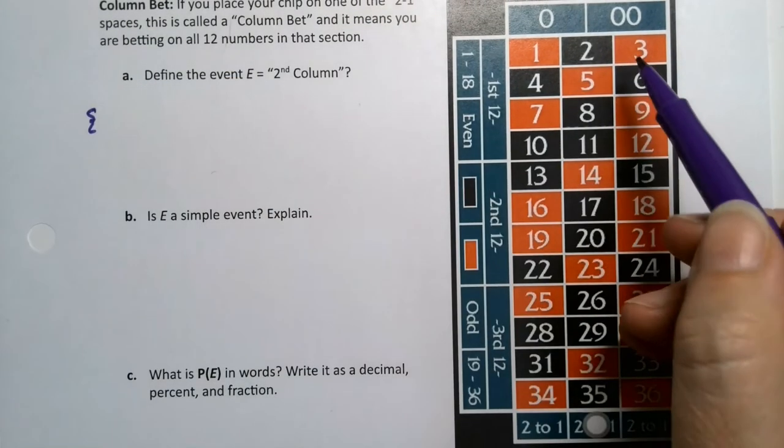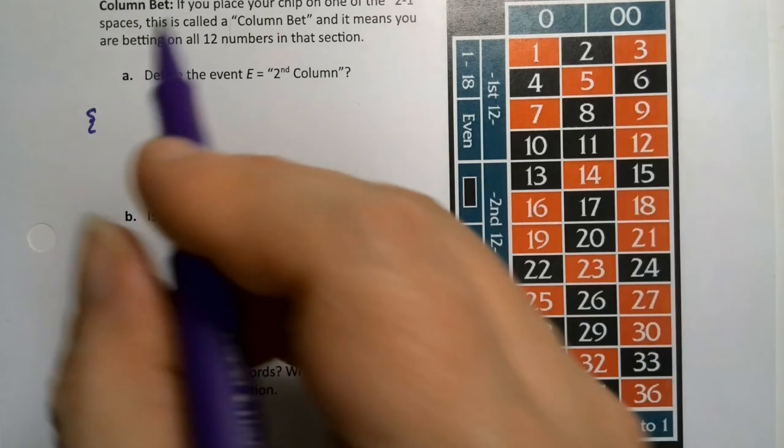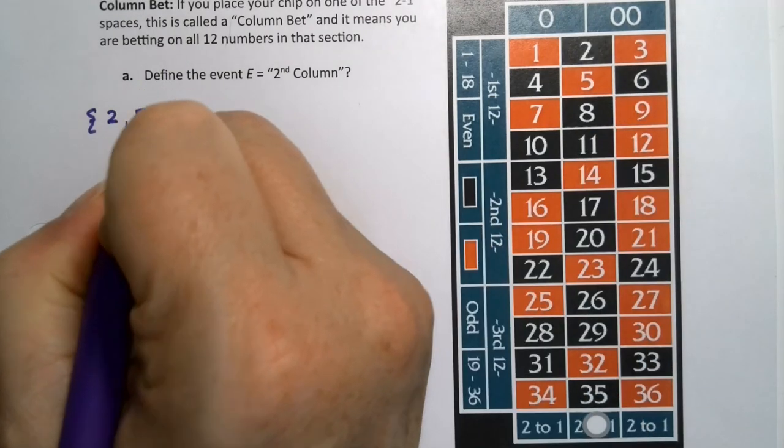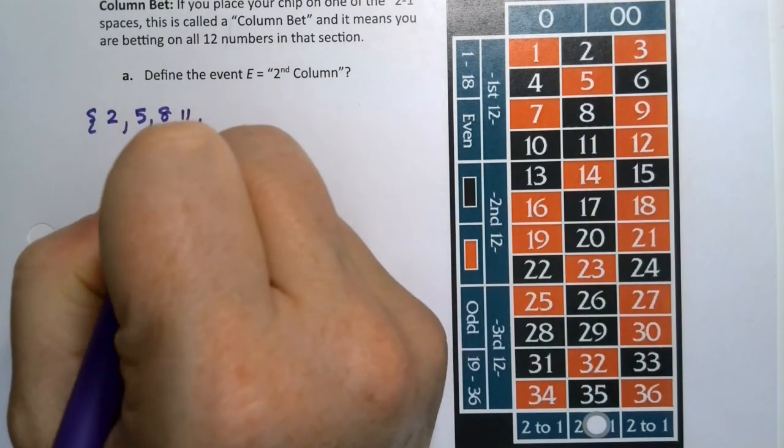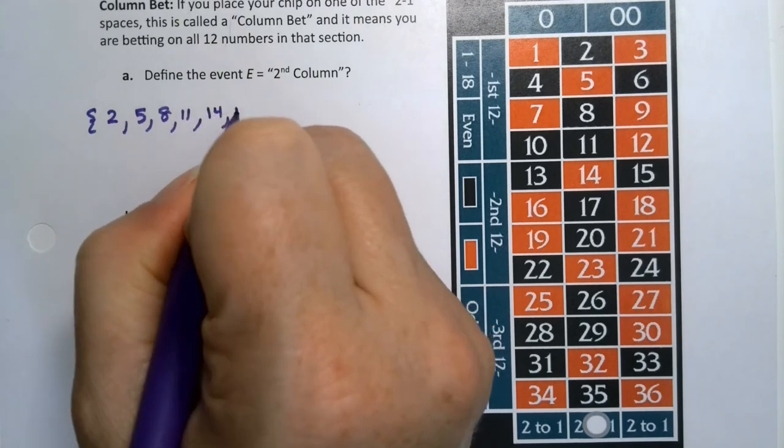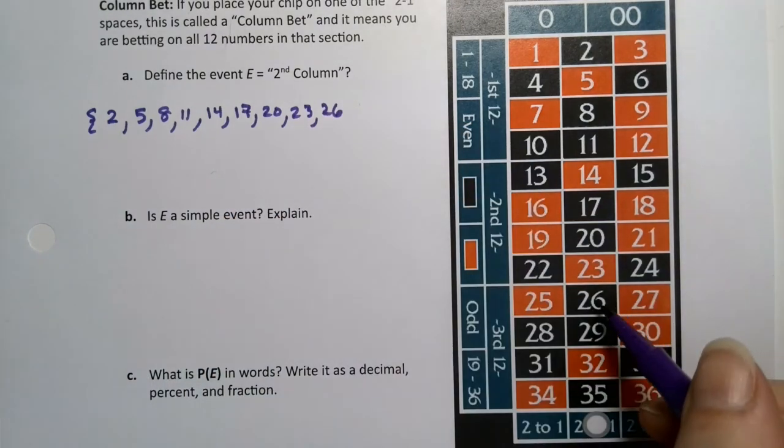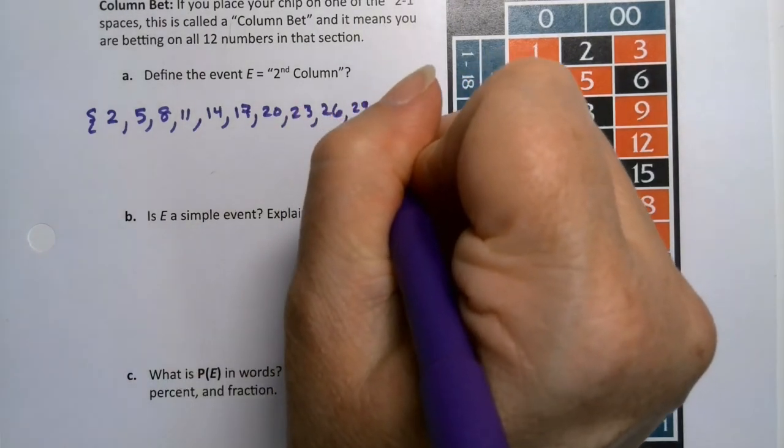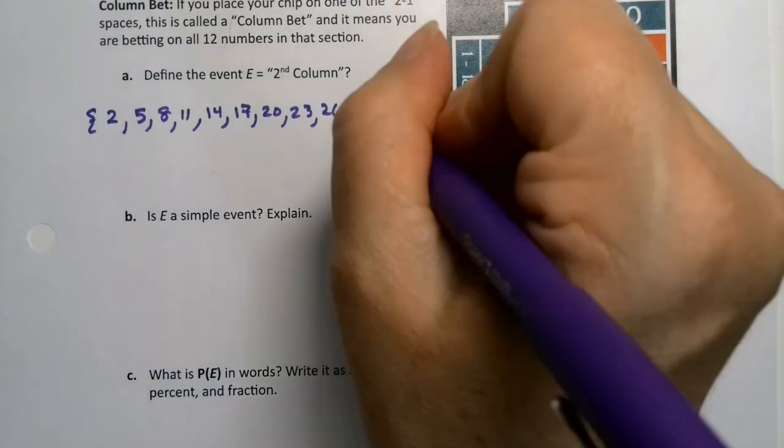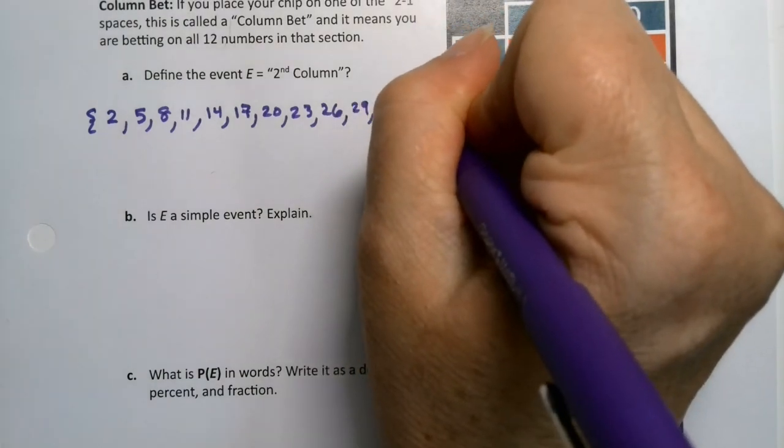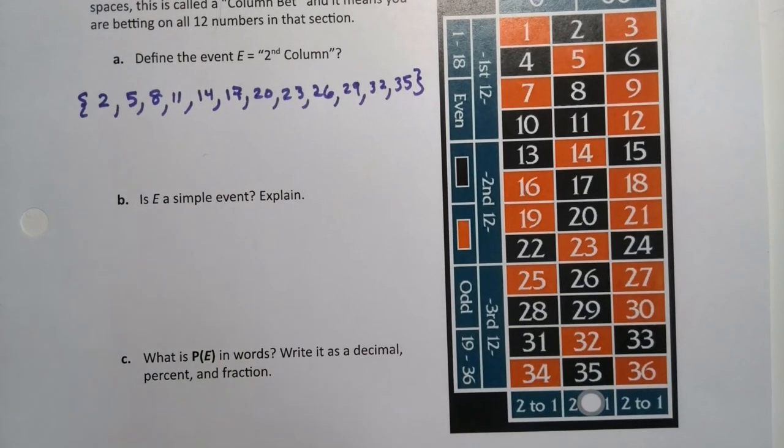What are you betting on? Well, the numbers 2, 5, 8, 11, 14, 17, 20, 23, 26, 29, 32, and 35. Those are the numbers you are betting on when you put your chip right there.